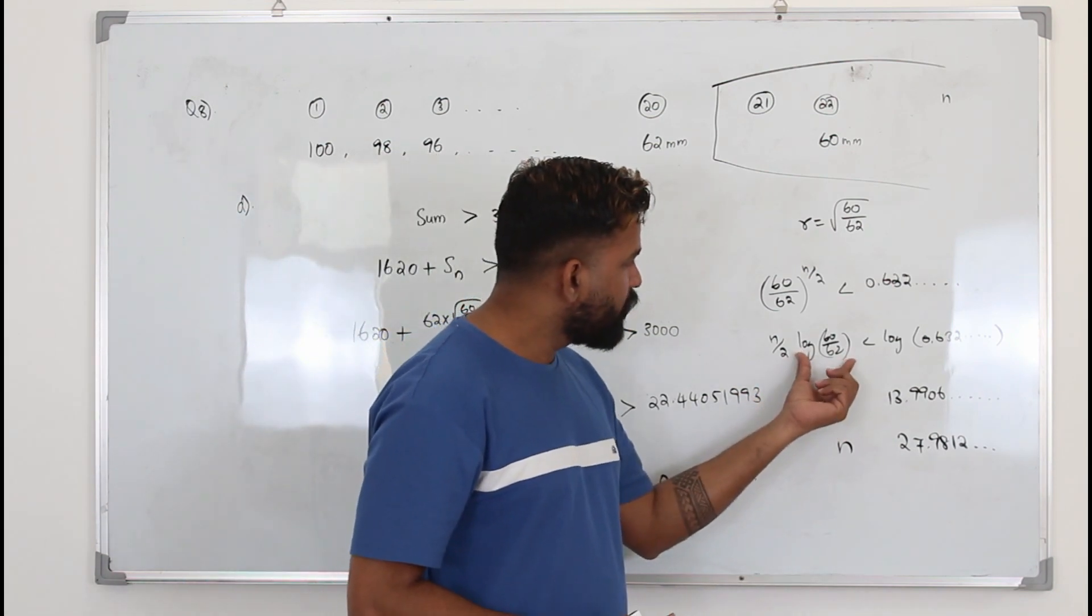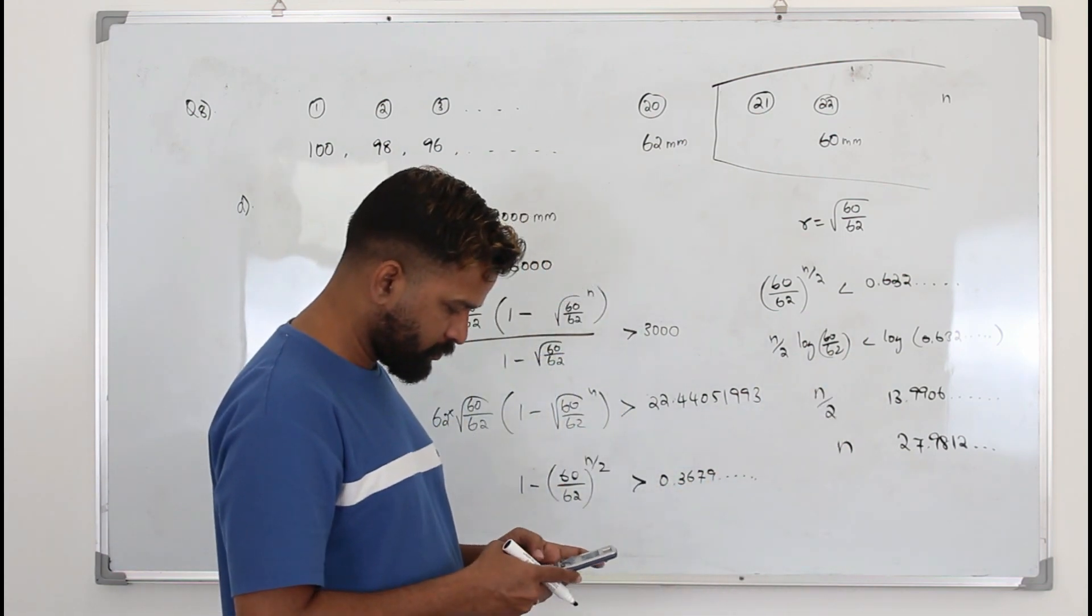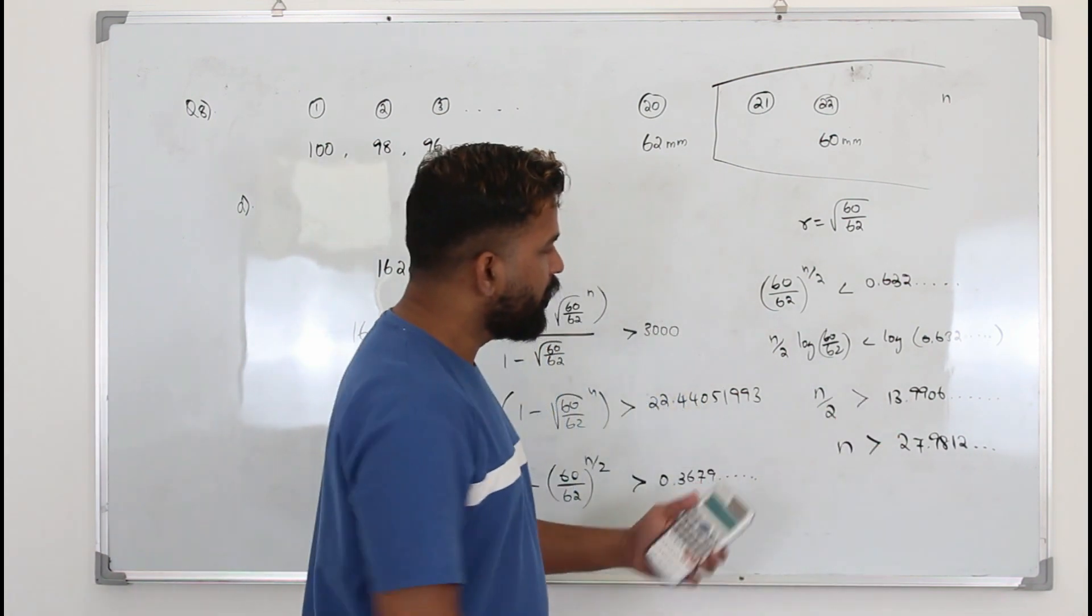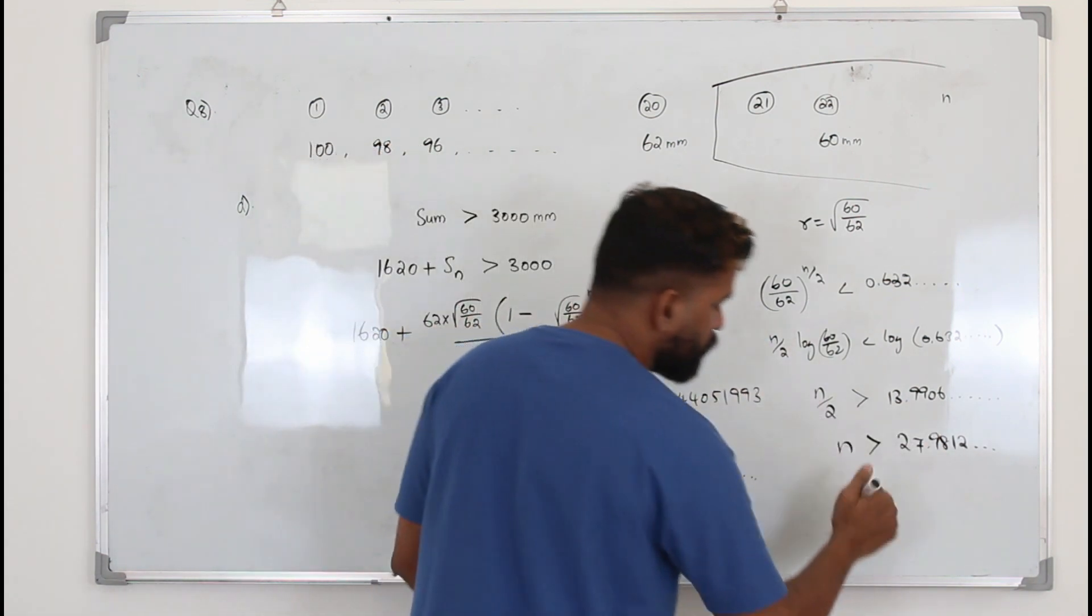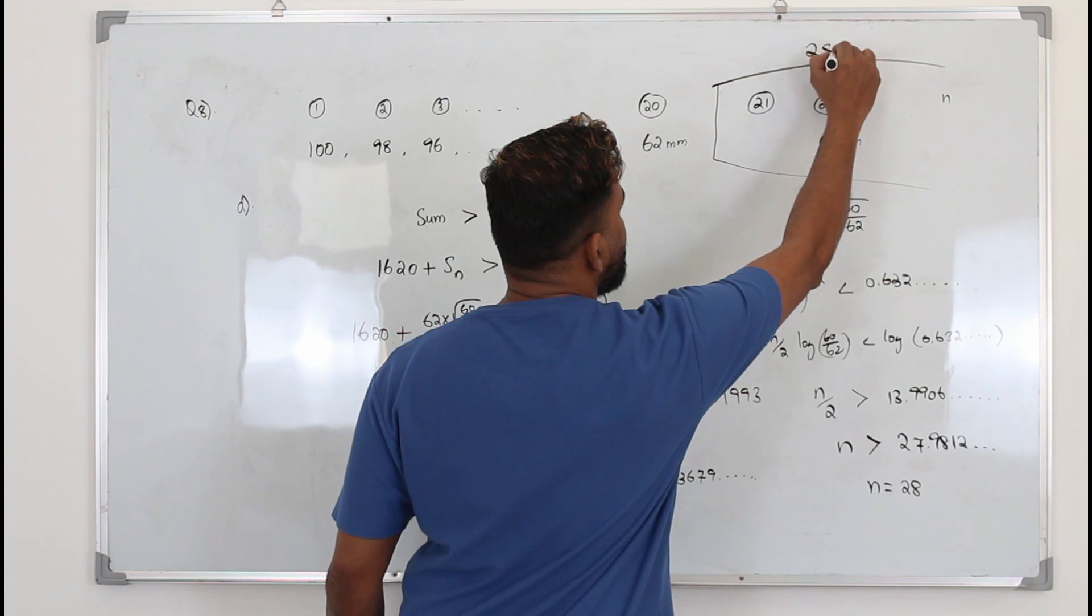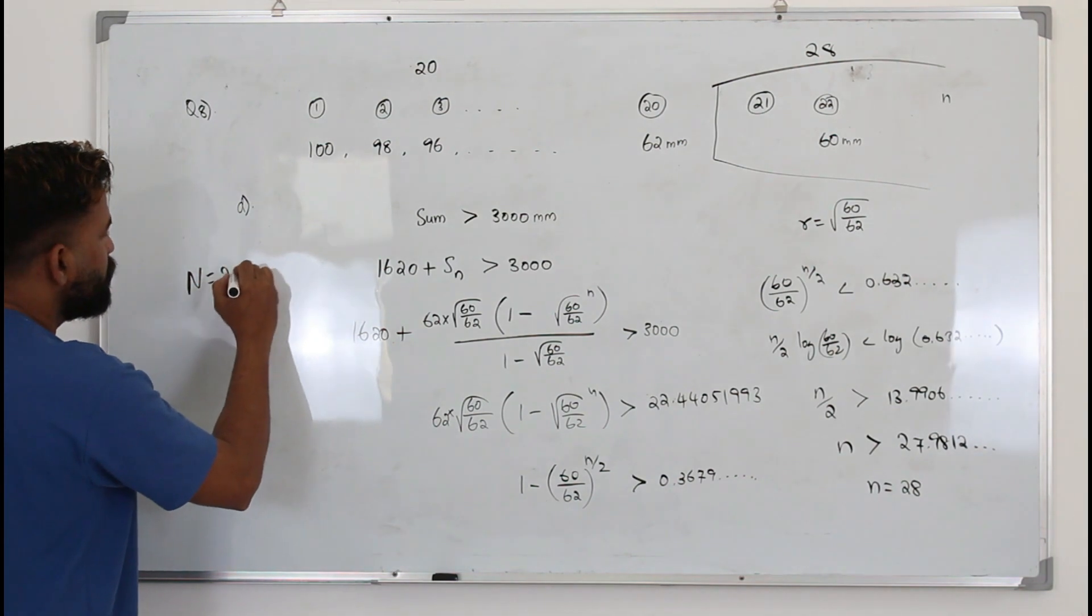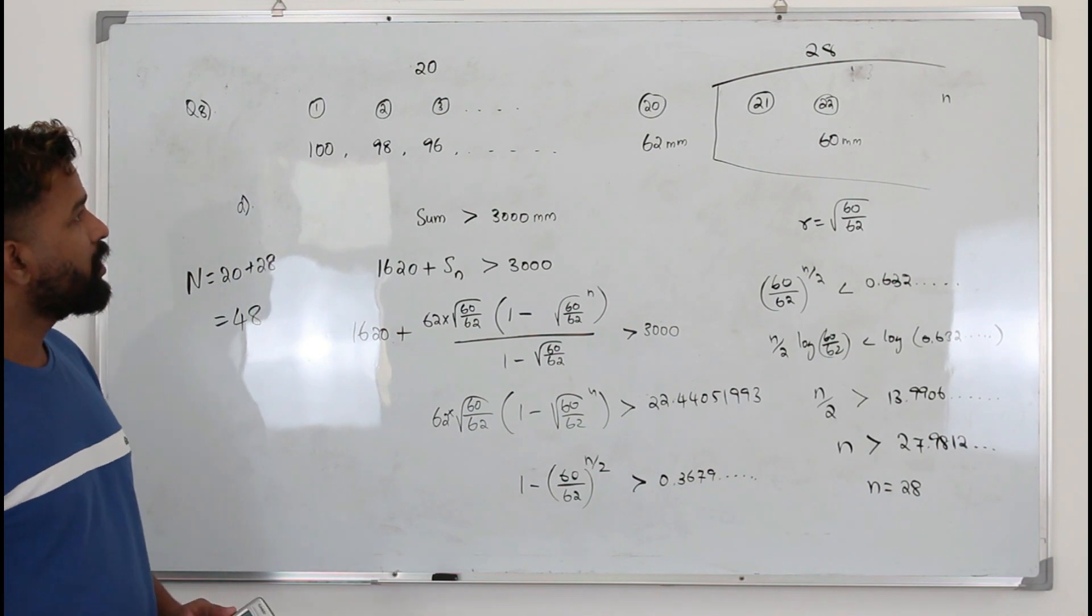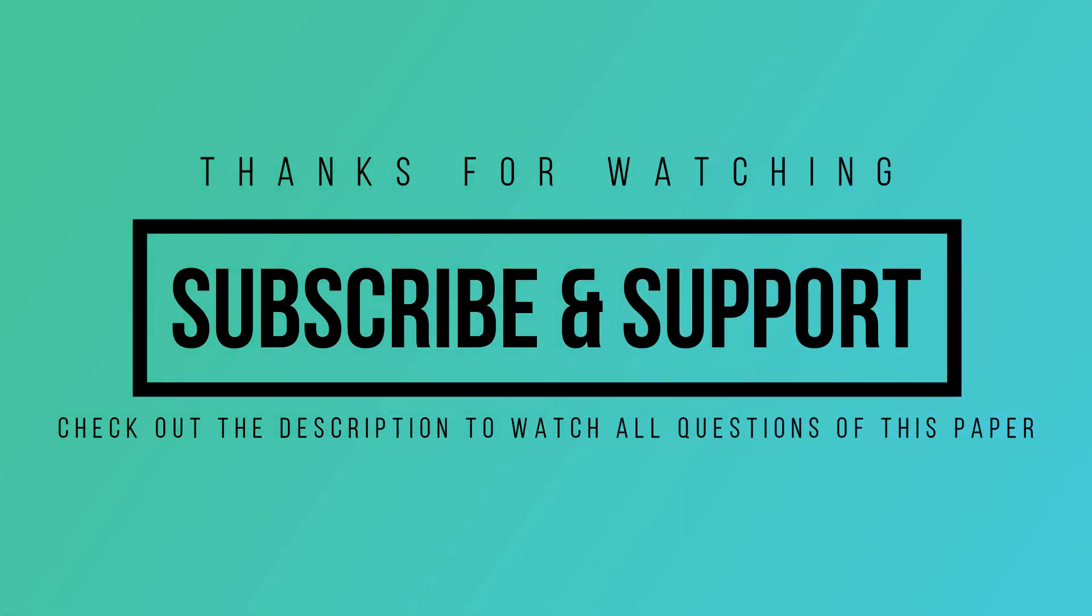For this sign, when you divide by log(60/62), which is a negative number, you need to flip the sign. So the number of terms should be more than 27.98, so we always round up to the next integer. So n is 28. Here you have 28 terms in the geometric part, plus 20 terms in the arithmetic part. So the capital N is 20 plus 28, which equals 48. That's the answer, because capital N is the total number of terms.